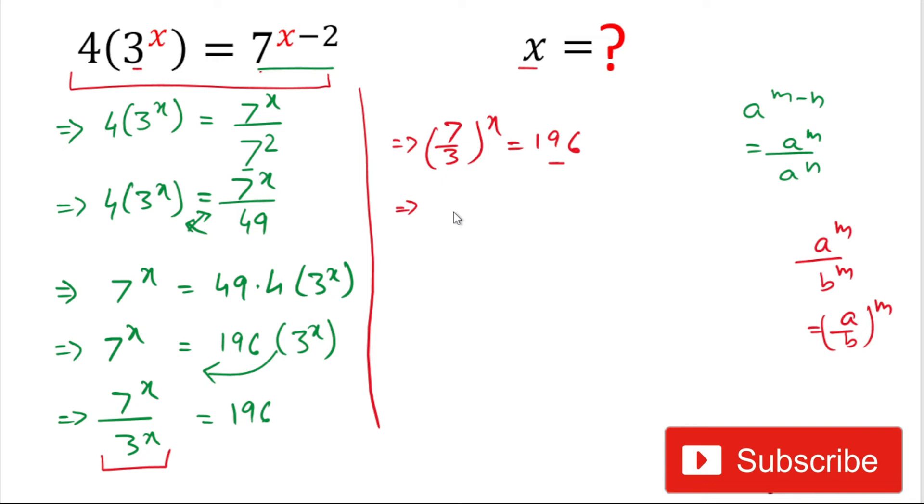Now for solving further, we will take log with base 7 by 3. So our new equation will be log base 7 by 3 of 7 by 3 to the power x equals log base 7 by 3 of 196.